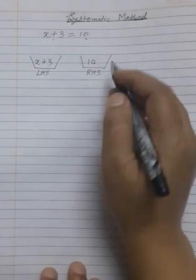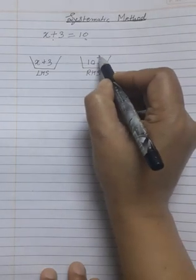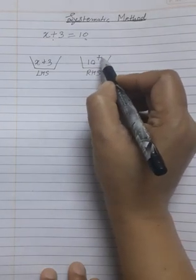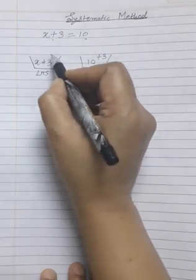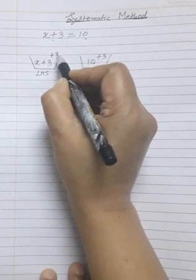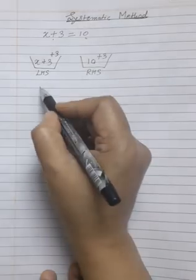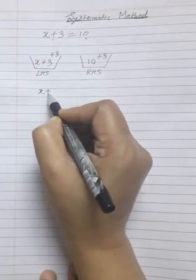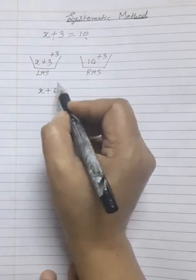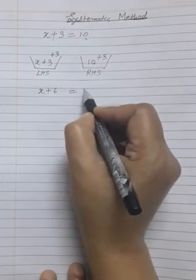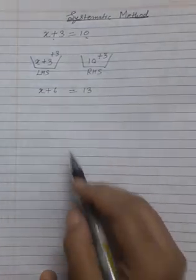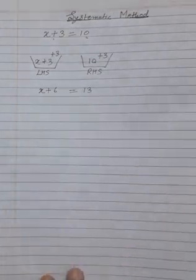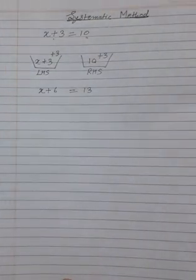Now suppose I add 3 to the left side. Then to keep it balanced, I have to add the same amount to the right side also. In that case, what will our equation be? x plus 6 — since 3 plus 3 is 6 — is equal to 10 plus 3, which is 13. So this is also a balanced equation.